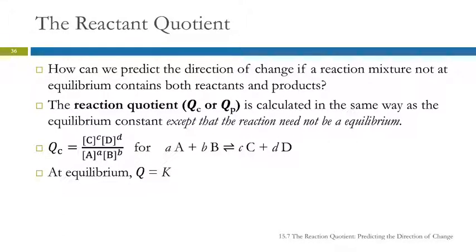The reaction quotient. When we look at an equilibrium reaction and we're given concentrations, how can we figure out if that equilibrium is going to go to equilibrium by going in the forward direction or the reverse direction?